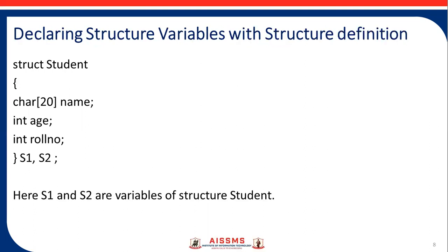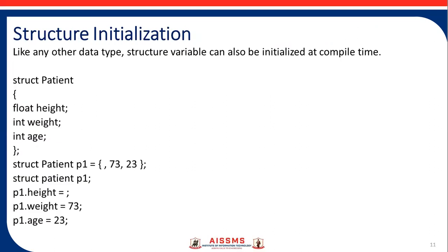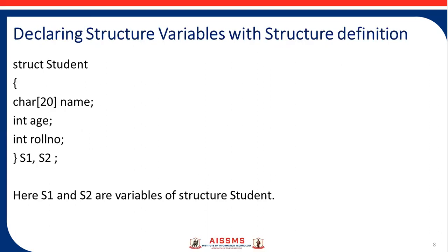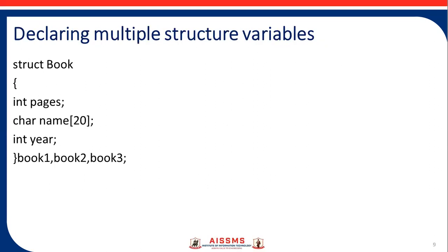Declaring structure variables with structure definition: here S1 and S2 are the variables of structure student. Next is declaring multiple structure variables. In that example, we use book as a structure: struct book, then int pages, character name, then int year, and then book1, book2, book3 — where book1, book2, book3 are the structure variables.